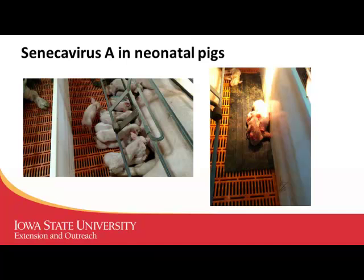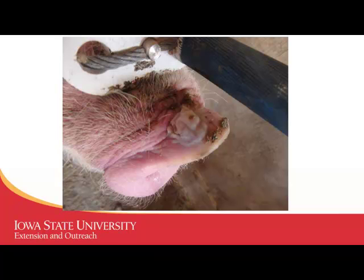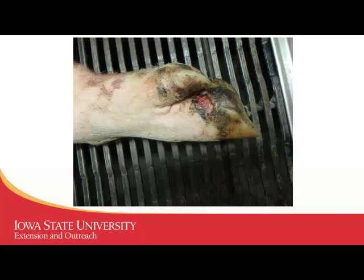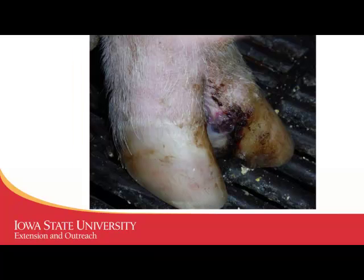Doing additional diagnostics on sow farms, you can still see the vesicles — here's a ruptured vesicle on the nose, and here's a healing erosion on the bottom of the feet as the sow is laying in the farrowing crate. She wouldn't necessarily be lame — still up eating — but when you got down and really closely looked at the feet, especially in and around the edges, the bottoms, and between the toes, you'd find some of these lesions. In one case the lesion was right in the middle between the two toes — if you weren't looking closely, you'd miss it.